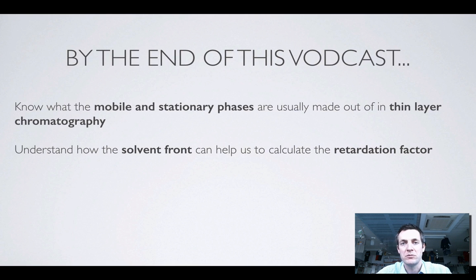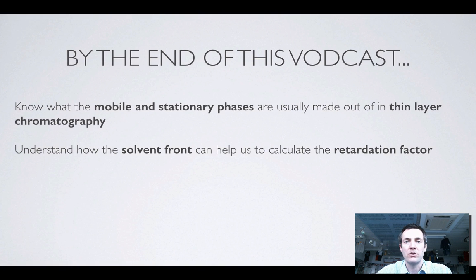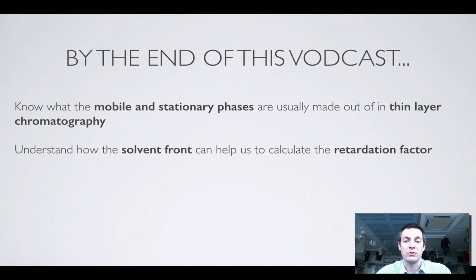Hopefully you've got a broad idea of how TLC works — how we set up one of these experiments, that the mobile phase is the solvent moving up the thin layer, and that the stationary phase is the thin layer of solid on the hard backing. You should be able to calculate the retardation factor if given the distances, and identify a component by comparing RF values with known substances. If you've got any questions or comments, please feel free to come and see me or post a comment on YouTube.